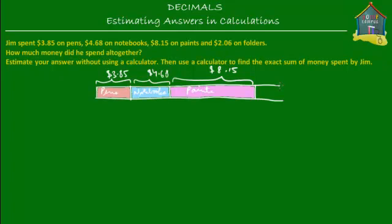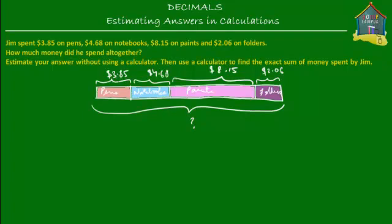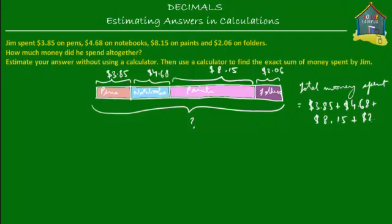And he spent $2.06 on folders. Now what we have to find out is how much money he spent altogether. It's very straightforward — all you do is add all these sums of money: 3.85 plus 4.68 plus 8.15 plus 2.06. So total money spent is equal to 3.85 + 4.68 + 8.15 + 2.06.